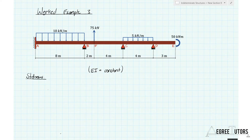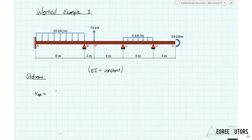We'll go straight on and work out our stiffnesses. If you're working along with this question and haven't yet tried it, go ahead and work out your stiffnesses yourself first before watching. The stiffness KAB for member AB is going to be 4EI over L because we are fixed at point A and continuous over the support at B. So KAB is 4EI over the length of 8 metres, which is 0.5EI.